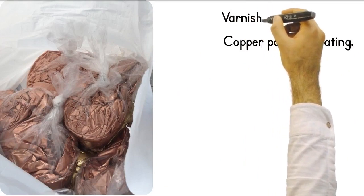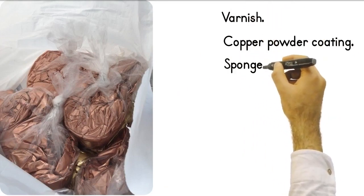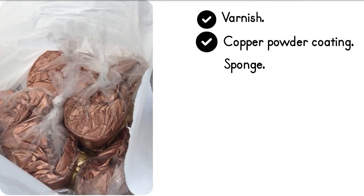For example, pour half a teaspoon of copper powder paint on the varnish and mix. Feed this mixture to the sponge thoroughly, but be careful not to leave very little on the sponge.